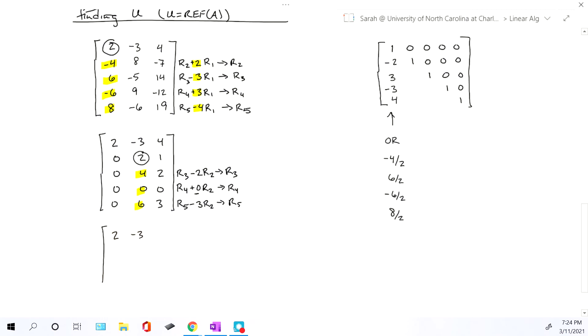So top two rows won't change. We'll still have the 2, negative 3, 4, then the 0, 2, 1. The next row will change. The 0, 4, 2 will turn into all three zeros. The next row already was three zeros, and the last row will also turn into all three zeros. And notice at this point, it's in echelon form, which means we found U.